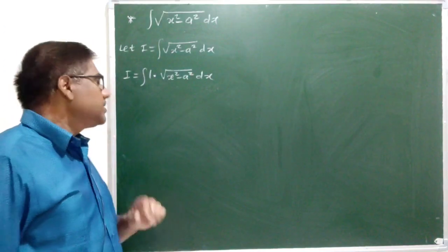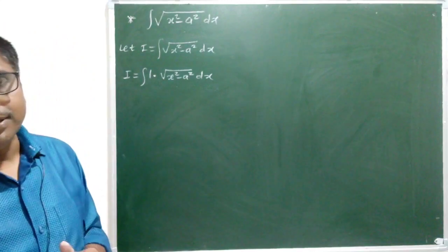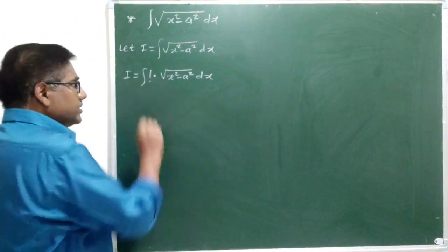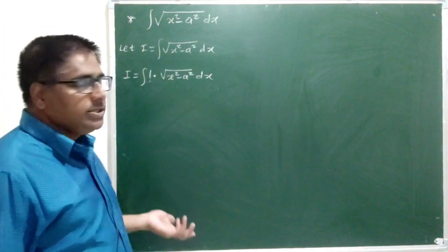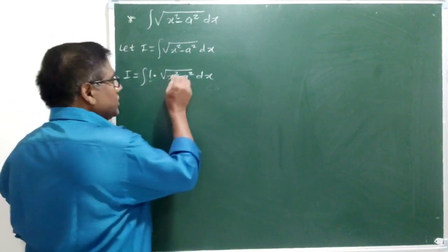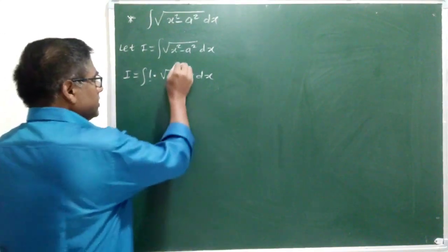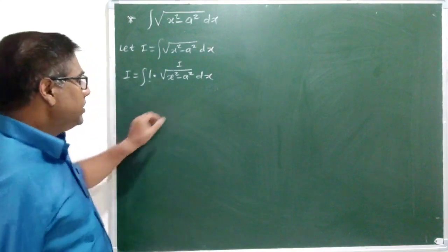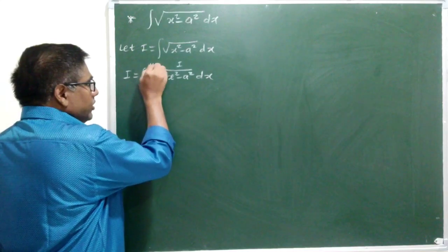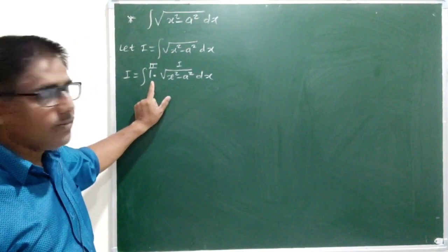While applying the integration by parts formula, we have to select first and second functions. The first function should be an easily differentiable function and the second function should be an easily integratable function. If you treat 1 as the first function, its derivative will be 0 and we will not get anything out of it. Therefore, it is better to take root of x square minus a square, which is an algebraic function, as the first function, and 1 as the second function, since its integration can be easily taken. Integration of 1 is x.